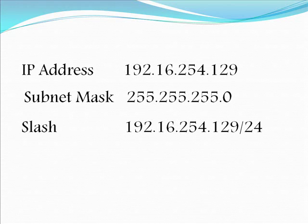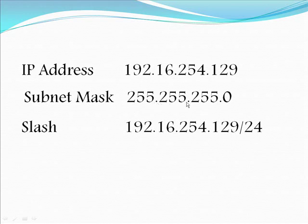What we're looking at now is your everyday IP address. Just picked this one at random: 192.16.254.129. This is going to be the example I'm using through most of this video. This is the default subnet mask for 192, which is a class C address. The subnet mask for that is 255.255.255.0. This slash method is just a lot quicker than writing out 255.255 every time — we just write /24 instead.